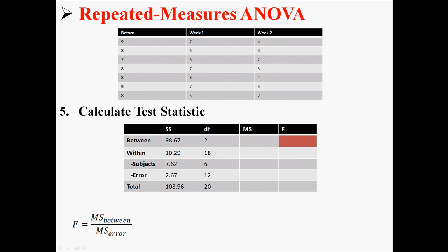Now in order to calculate the f that we need, we need to find mean squared between and mean squared error. Mean squared between is just sum of squares between divided by degrees of freedom between, 98.67 divided by 2, and we get 49.34. Now mean squared error is just sum of squares error divided by degrees of freedom error, or 2.67 divided by 12, and that's 0.22.